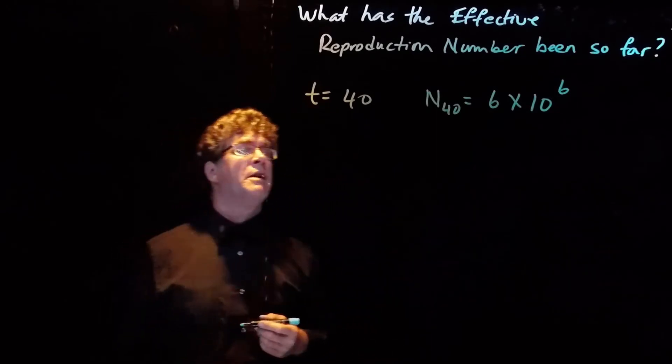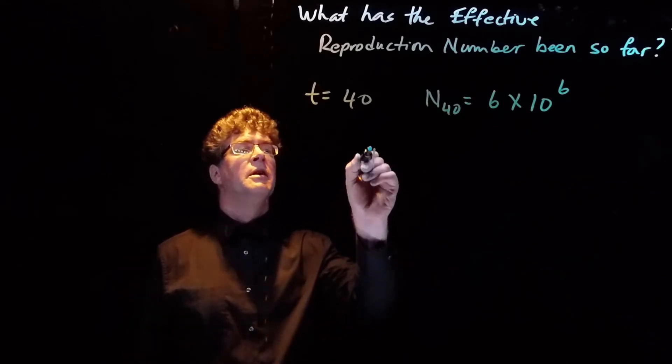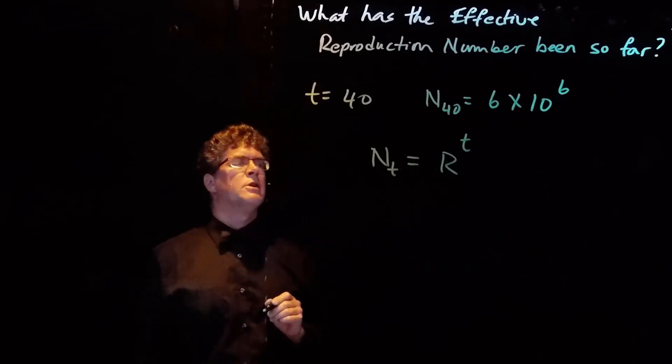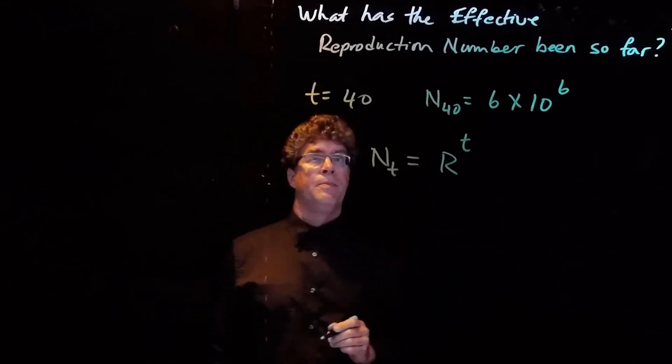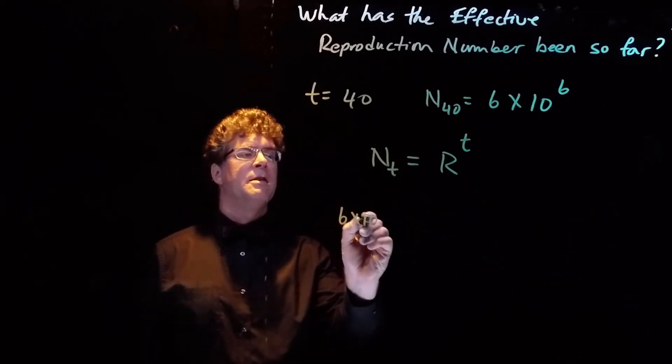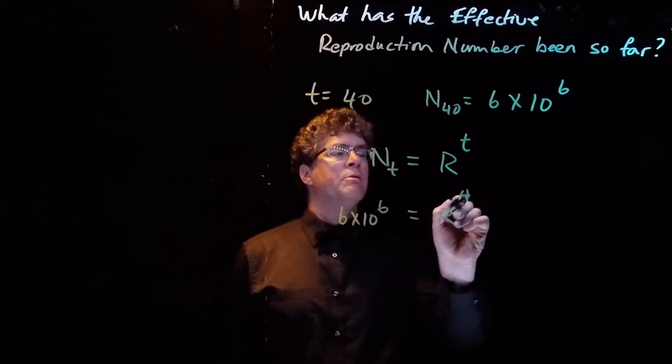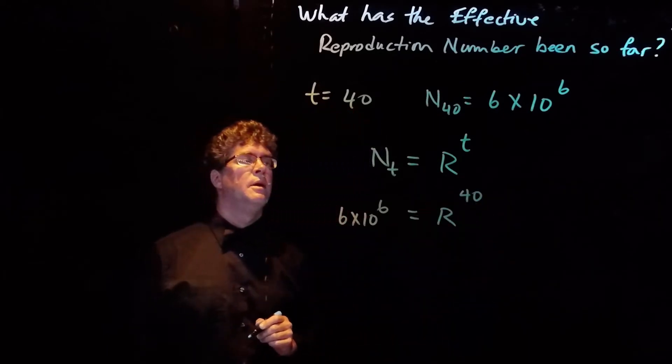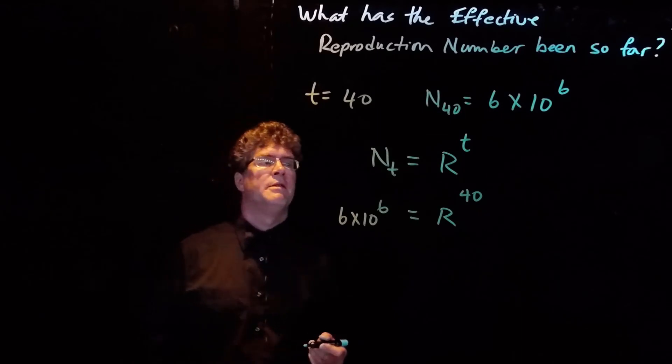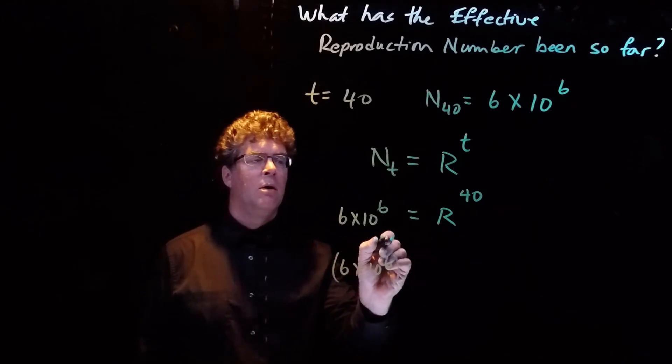Now, if we would like to know the effective reproduction number, we can remember the formula for the number of infectives in terms of the effective reproduction number. This is the number of infectives is the effective reproduction number raised to the power t. So we have everything we need. We put in 6 times 10 to the 6 for N_t. We don't know what R is, but we put in 40 for t here. We want to solve this for R, and if we do this, we then know what the effective reproduction number is.